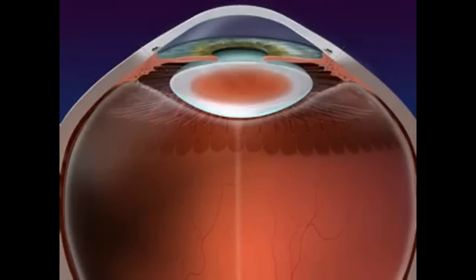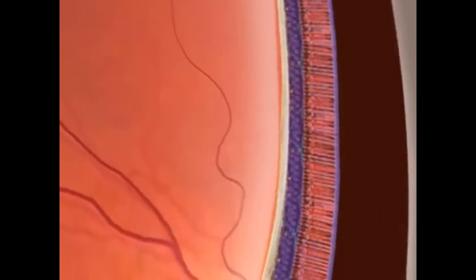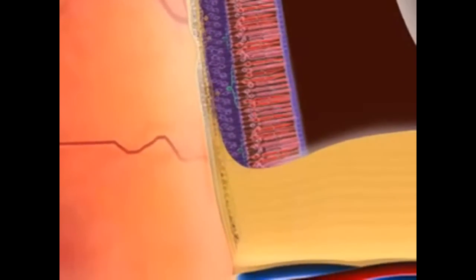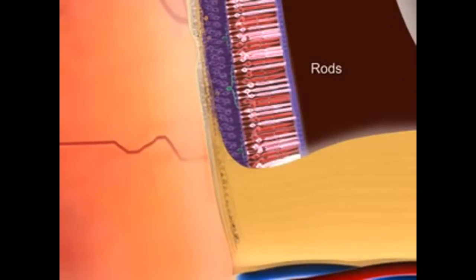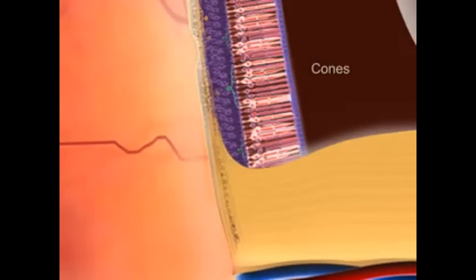The retina is the inner layer and contains the nerve cells, the rods and cones, and the bipolar cells. Rods are sensitive to light but do not sense color. Cones sense color.